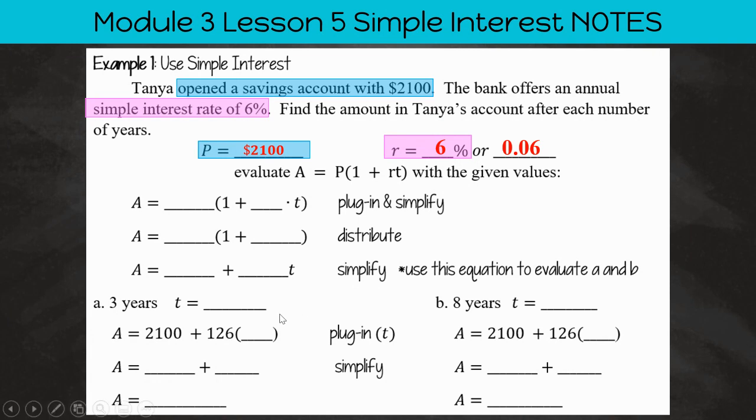Now we need to evaluate our formula A equals P multiplied by 1 plus RT with the given values. So we have all of our highlighted variables. And now we're going to plug in for P and plug in for R. So our P is $2,100 and our R is 0.06. We are not going to use the percent. We're going to use the decimal.